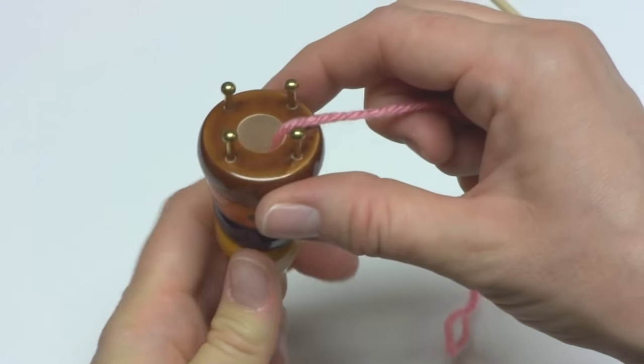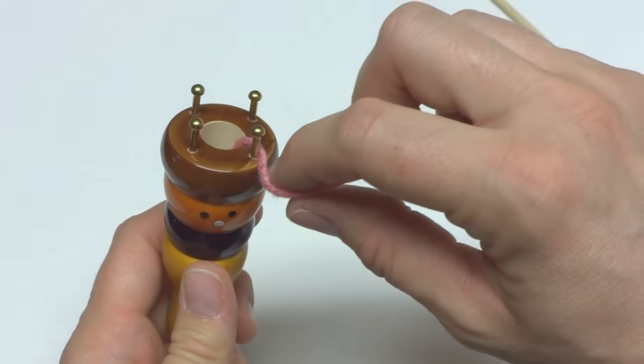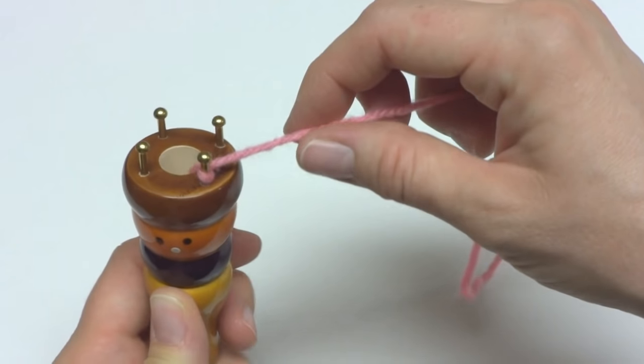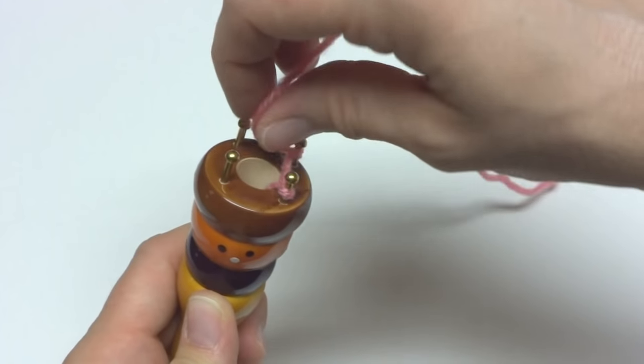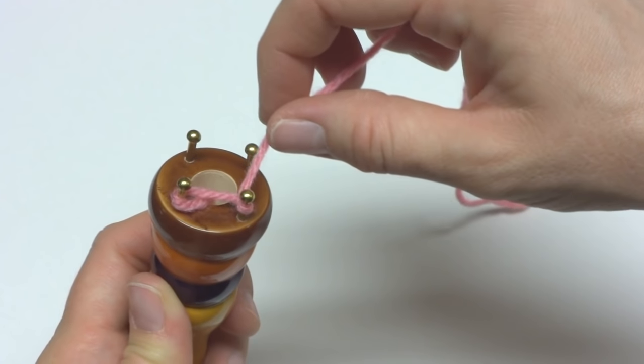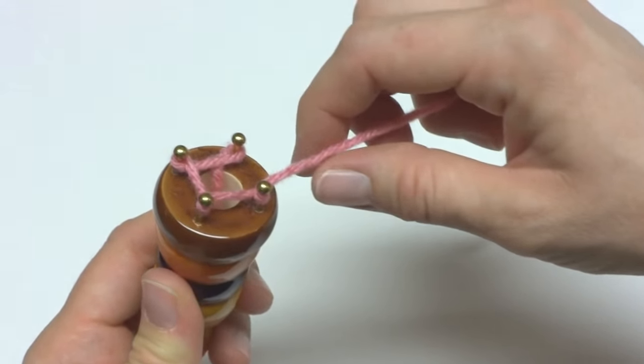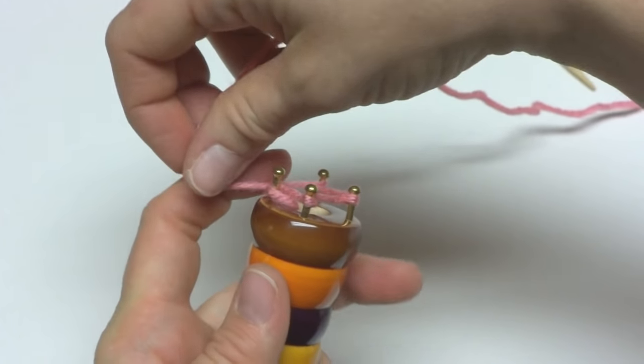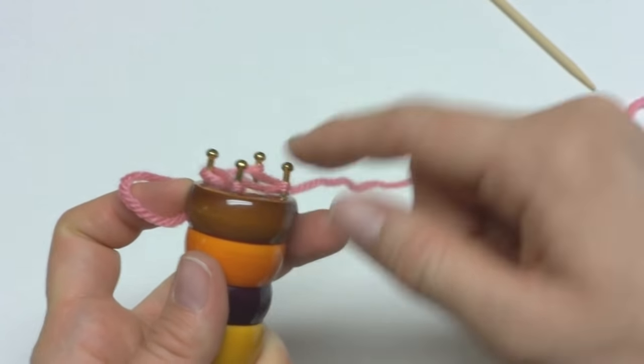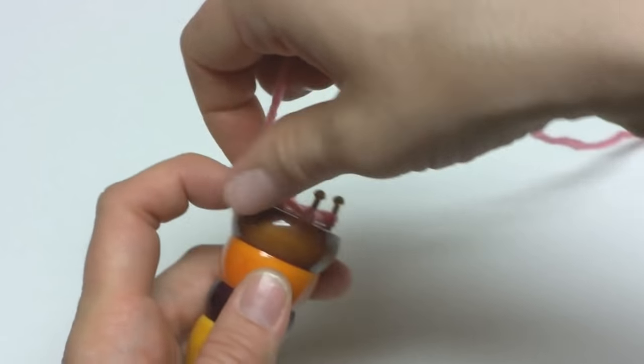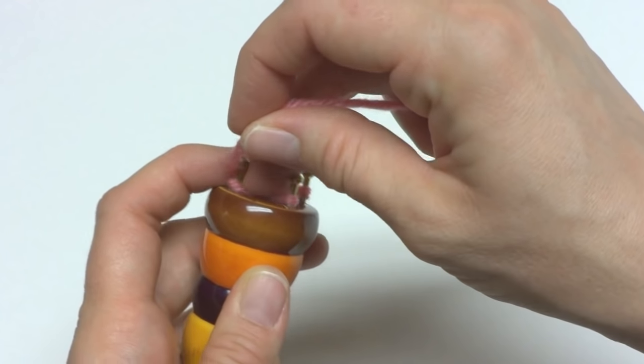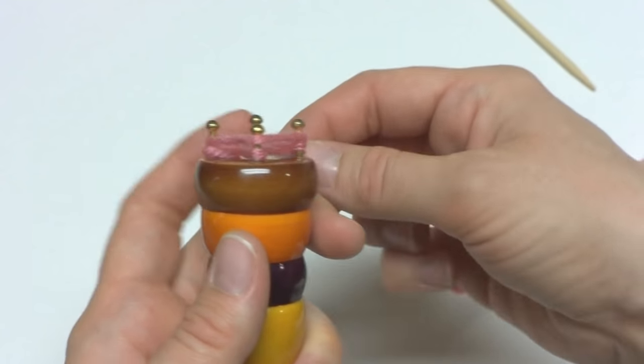So to begin, we're going to wrap the yarn around the first peg in a clockwise direction. I'm doing this very loosely. You don't want it to be too tight because you need to be able to lift the stitches. We're just going to push everything down. And then we're going to wrap the yarn around the outside of the pegs.